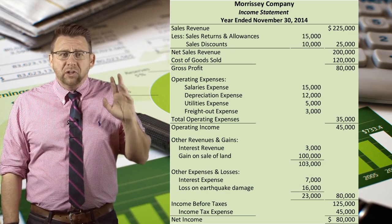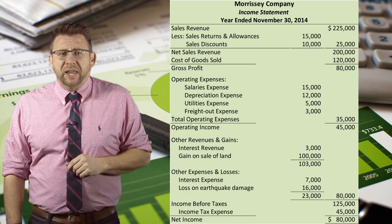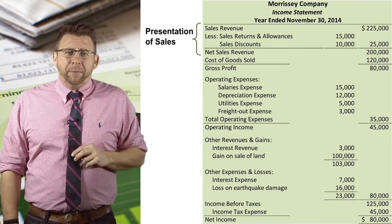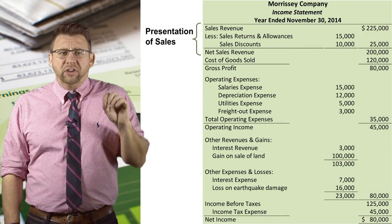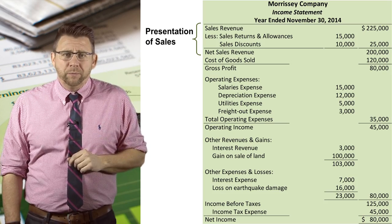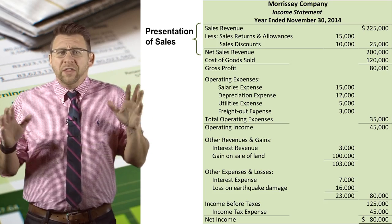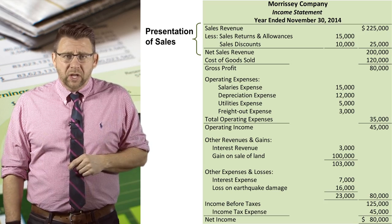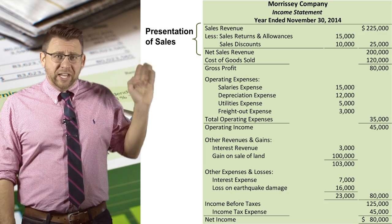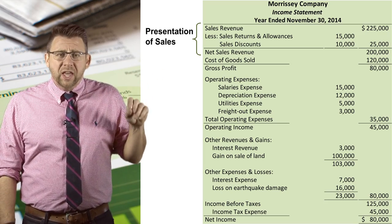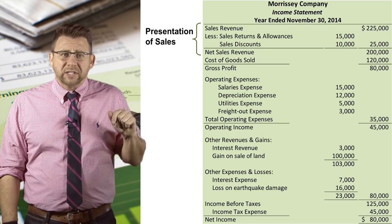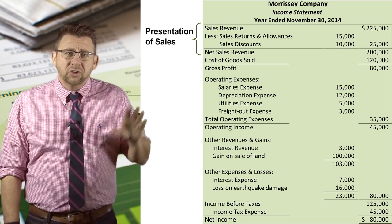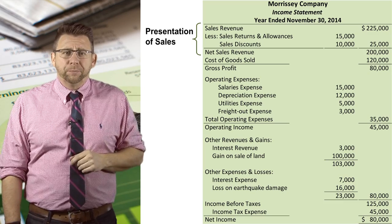Now let's look at the multi-step income statement more closely. It starts with the calculation of net sales revenue — no other revenue is included in this section. Sales revenue is reported first, then sales returns and allowances and sales discounts are deducted to arrive at net sales revenue.